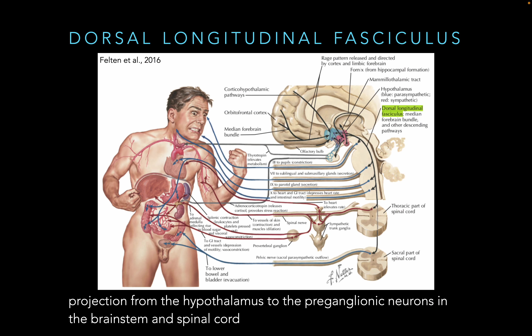There's another tract with a very similar name: the dorsal longitudinal fasciculus. This is the collection of fibers that connects the hypothalamus to preganglionic autonomic neurons. The dorsal longitudinal fasciculus runs through the brainstem connecting us to parasympathetic cranial nerves, also running down into the thoracic and lumbar spine for sympathetic input, and to the sacral spine for parasympathetic again — the parasympathetic sandwich. This allows our emotions to create a visceral response: anger will cause sweating, an increase in heart rate, and decrease in digestion.